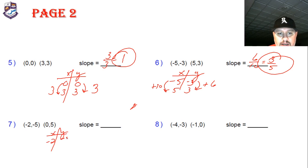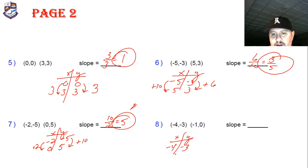Next one, x-y: negative 2 negative 5, and 0, 5. My rise I'm increasing by 10, my run I'm increasing by 2. So 10 over 2 simplifies to 5, or 5 over 1.